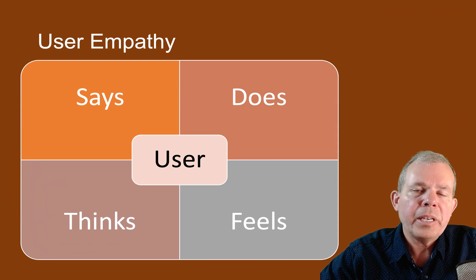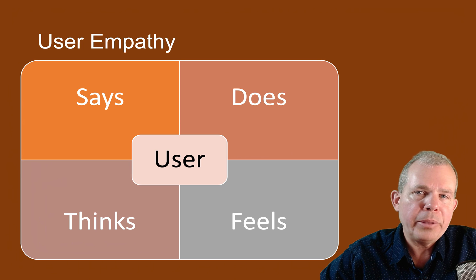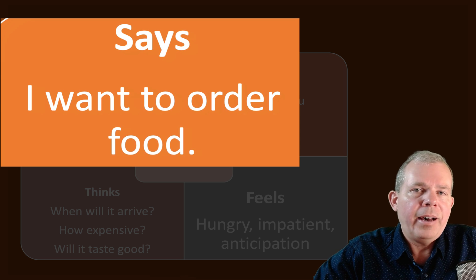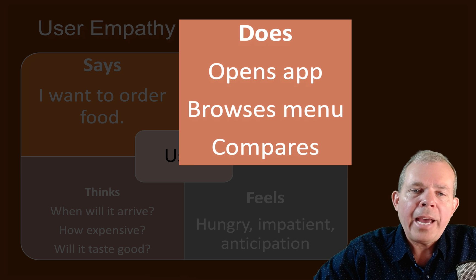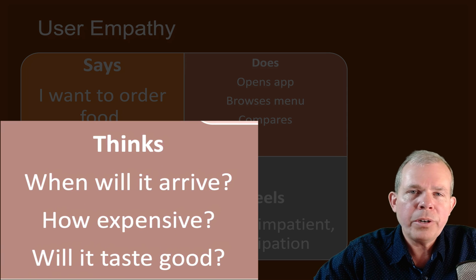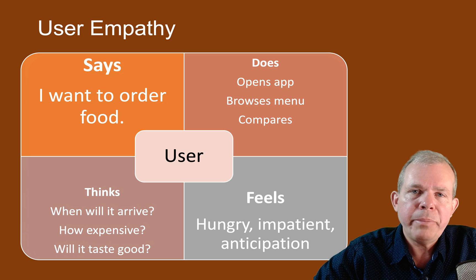A good exercise to make this successful is to create a user empathy map. You identify your user and try to predict and live in their shoes — what does your user say, what do they do, what are they thinking, and how do they feel about the experience at each stage? For example, someone ordering from a restaurant: they might say 'I'm hungry' or 'I don't want to cook tonight.' They open the app, browse the menu, and do comparisons. You can imagine what they're thinking — when will it arrive, is it expensive, will the food taste good, will it be cold or soggy, will the people be rude? There are all kinds of questions in that person's mind.